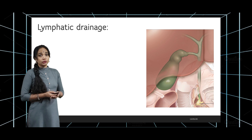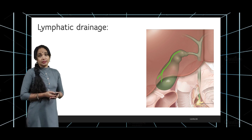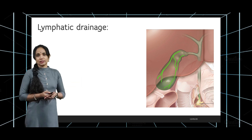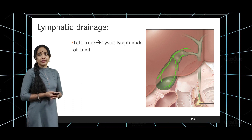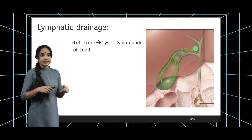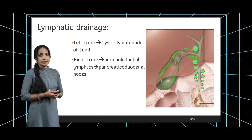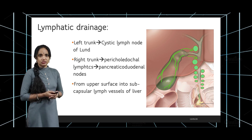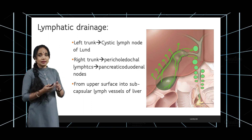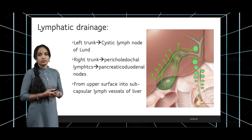The lymphatic drainage has two trunks: one starting from the medial or left border and the other from the right border. These two trunks are obliquely connected forming an N pattern. The left trunk drains into the cystic lymph node of Lund in Calot's triangle, and the right trunk drains into the pericholedochal lymphatics, then to the pancreaticoduodenal nodes, and on to the pre- and para-aortic nodes. Additionally, from the upper surface of the gallbladder, subcapsular lymphatics drain via hepatic lymph nodes.